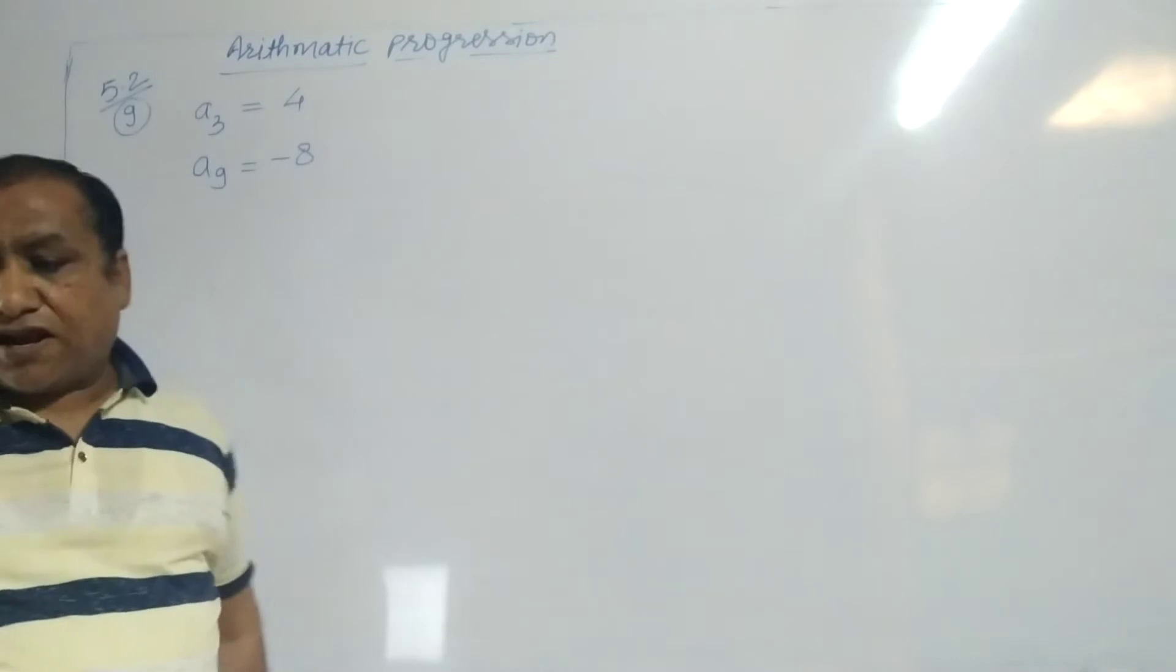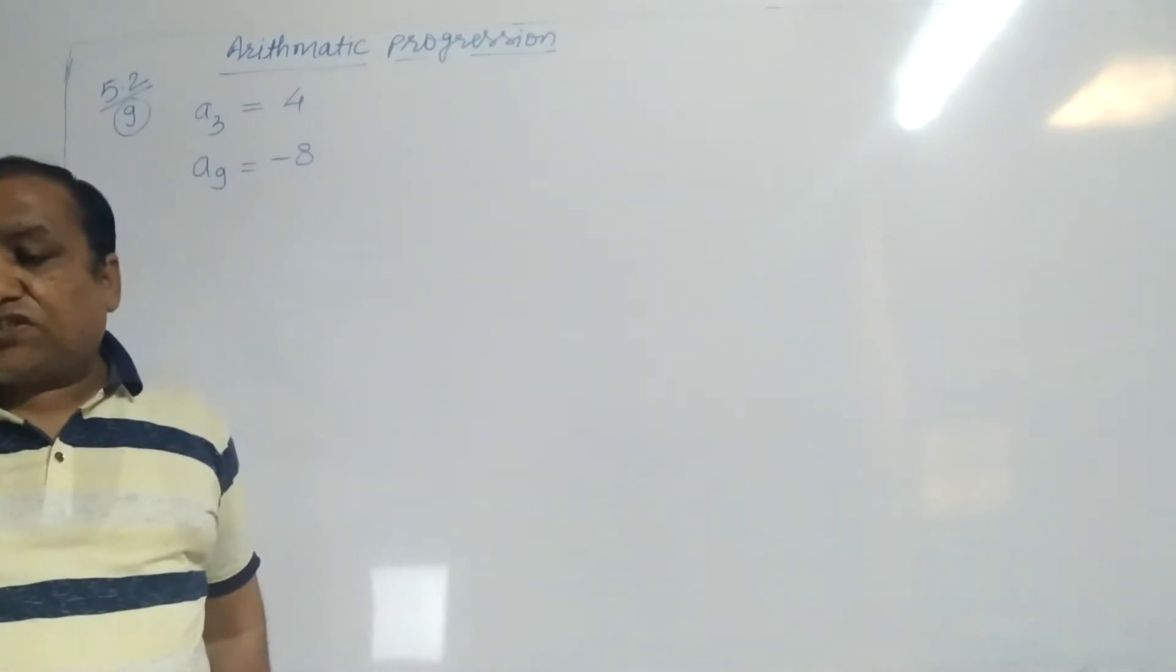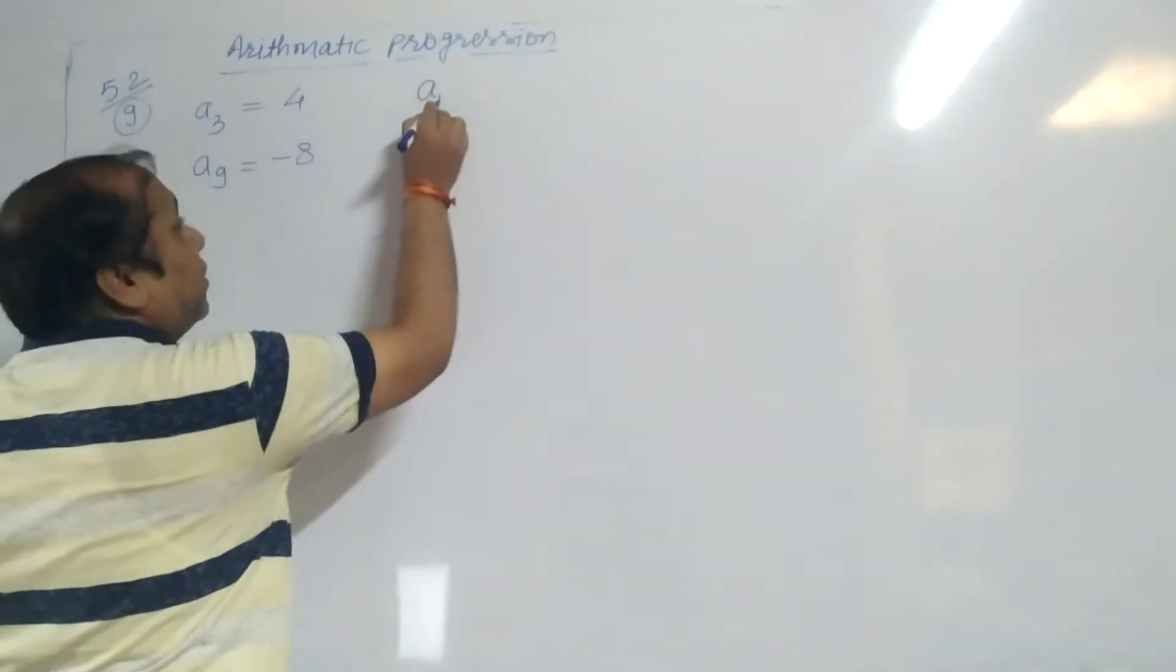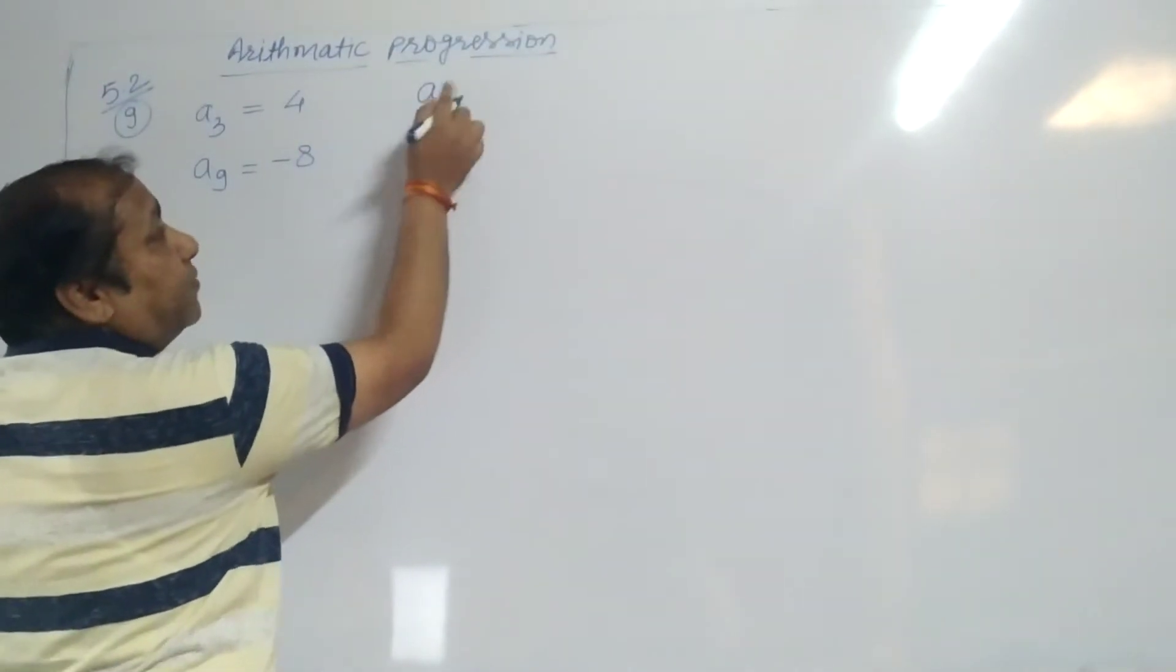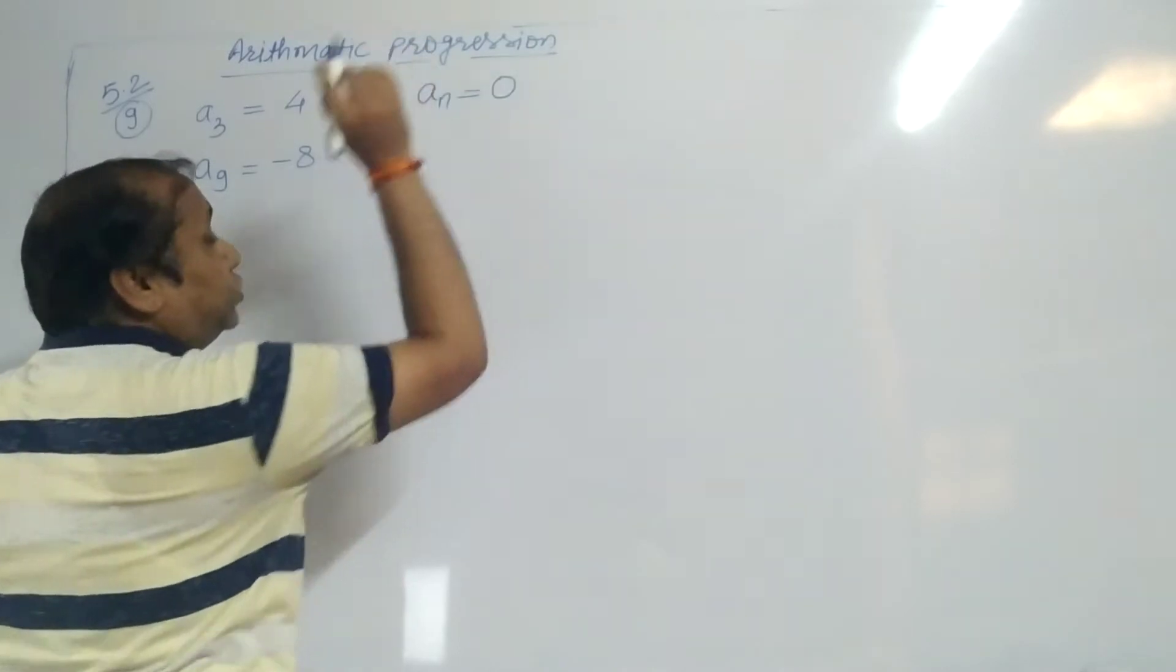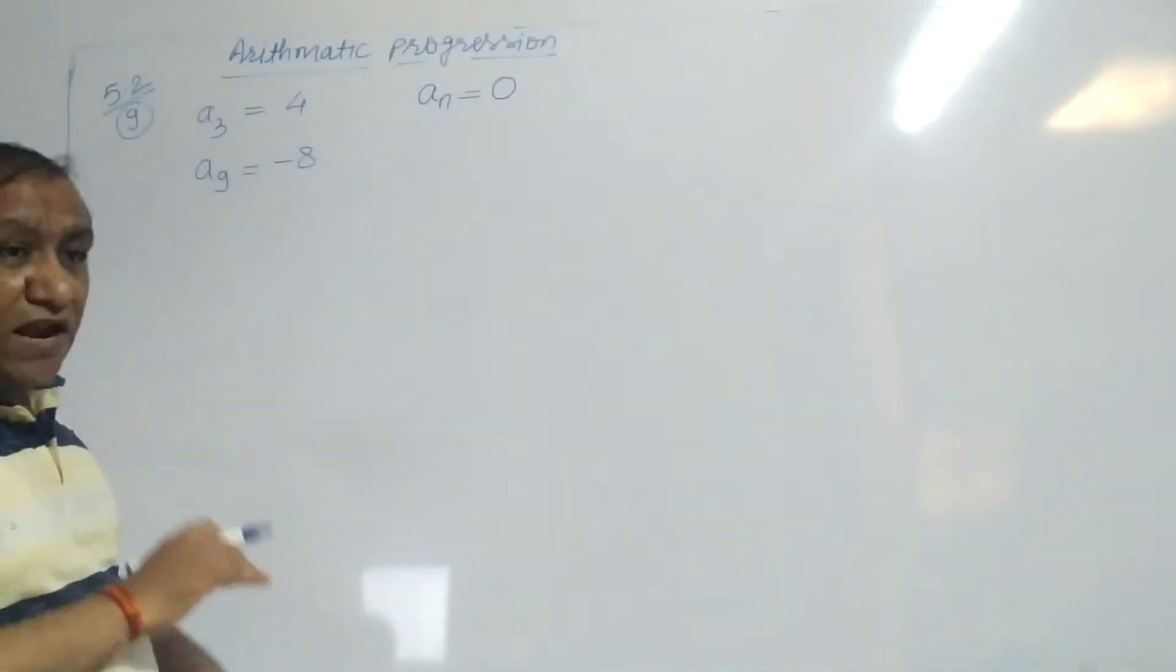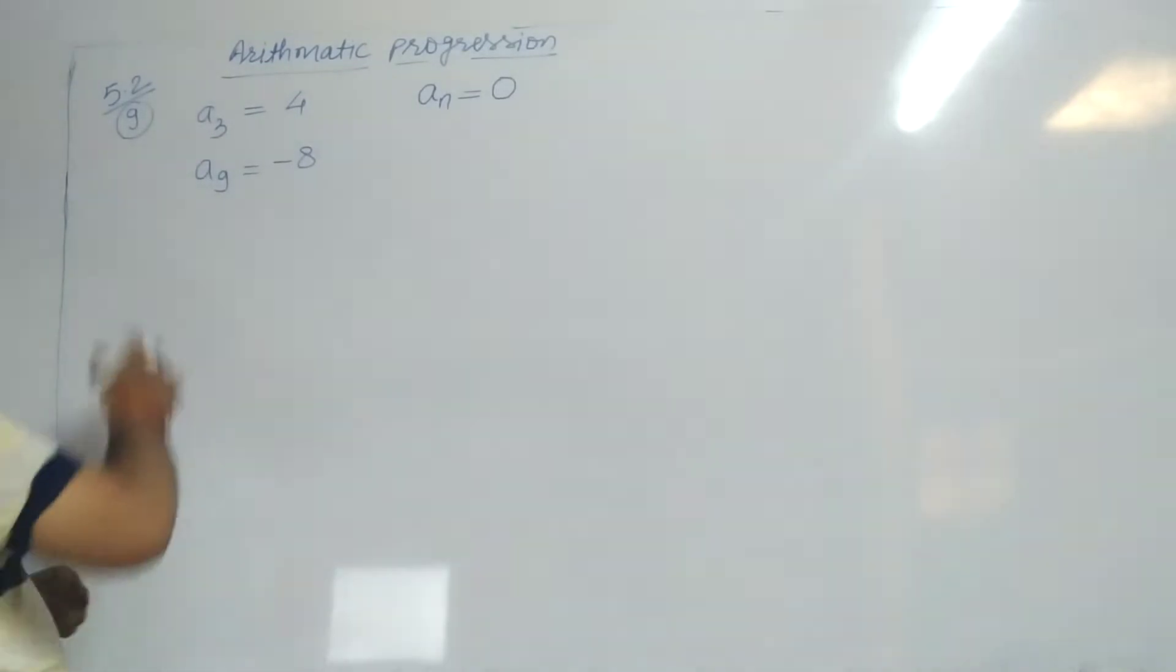Then find which term of AP is 0. We need to know which term number has the value 0. This means at which term number will we get zero? Solve.